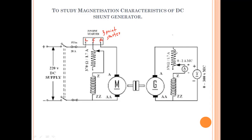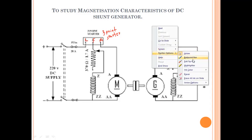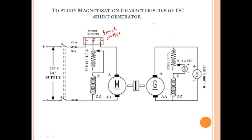We need to find the magnetization characteristics of the generator. The magnetization characteristics of the generator is also called OCC, that is the open circuit characteristics of the DC generator.